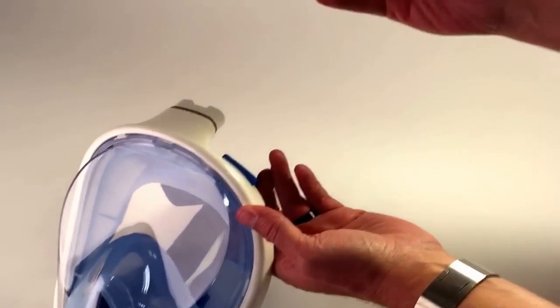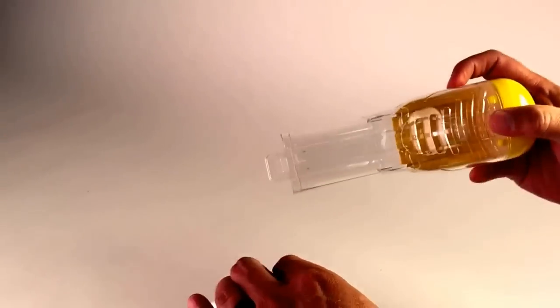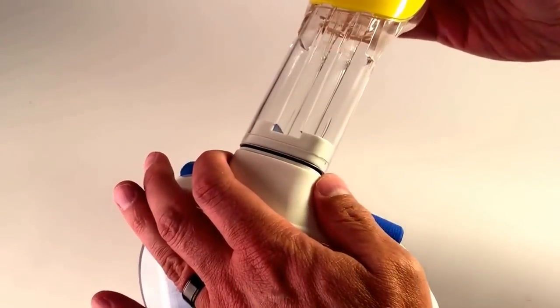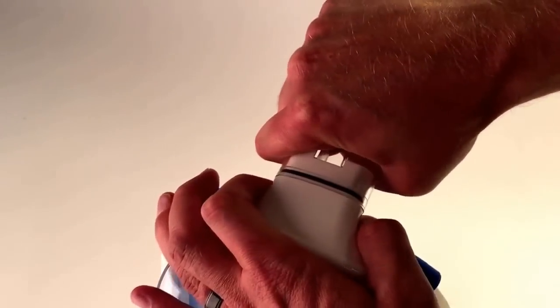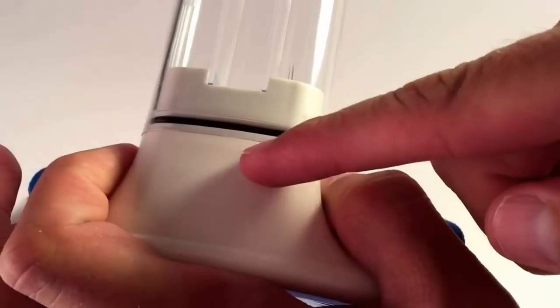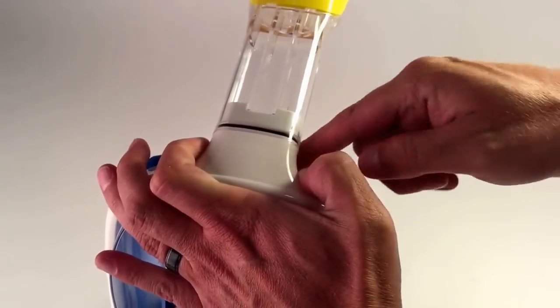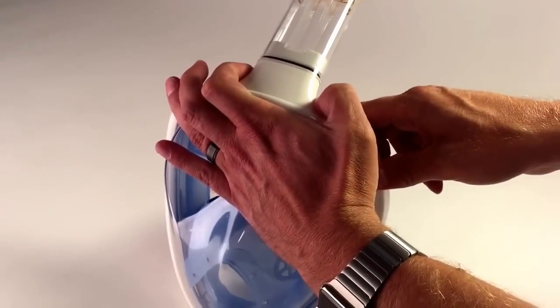Then take the snorkel piece and make sure this part is facing backwards towards the mask. Slip it on until it hits the seal, then firmly wiggle it until it goes past the seal and sits flush towards the mask. You don't want any gaps in between. You want it flush towards the mask, and then you're good to go.